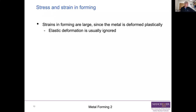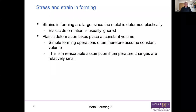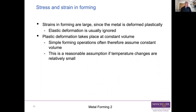Let's think about what goes on in forming. Strains in forming are large because the metal is deformed plastically, so we usually ignore any elastic deformation. The elastic deformation takes place early on and is a function of both the material and the stiffness of the machines. For simple calculations, we usually ignore it. Plastic deformation takes place at constant volume, so for a simple forming operation calculation we often assume constant volume. If the temperature doesn't change very much, that's a very good assumption.